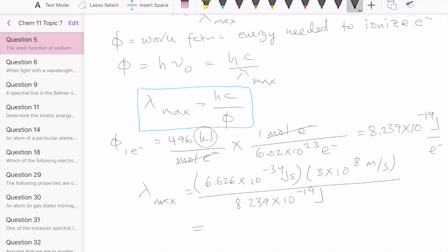We get a lambda that's equal to 2.41 times 10 to the minus 7 meter. You can see this unit coming up because the joules cancel and then the second and the per second cancel out. And of course, this is just the same as 241 nanometer.